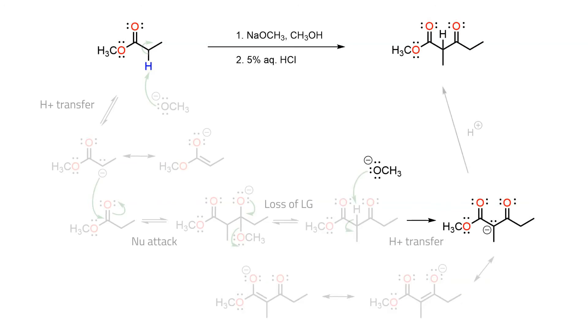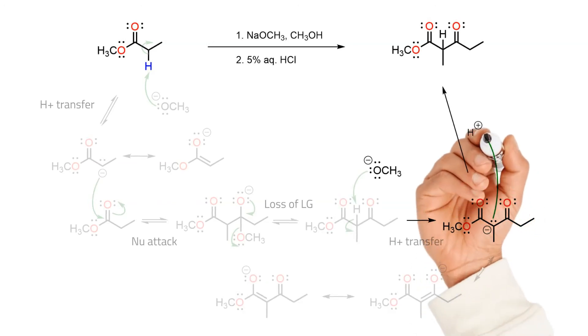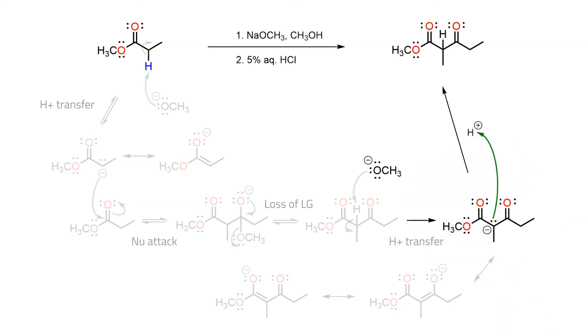In order to work up the reaction, an acid is added to neutralise the mixture. This quenches the anion and provides the isolated beta-keto ester.